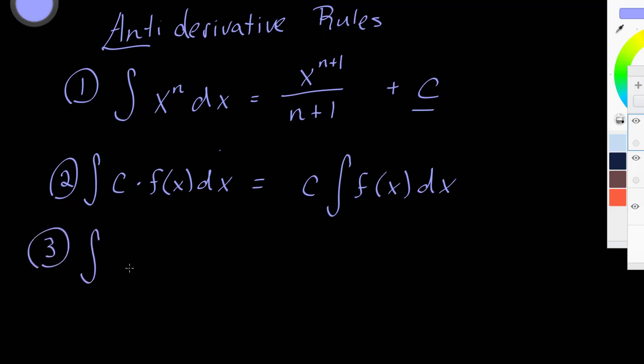The third rule is that if you're taking the anti-derivative of, say, two functions, f of x plus g of x, what you can do is that you can take the anti-derivative of each function individually. Note that if you do this, you only have to add one constant to the end of your solution.